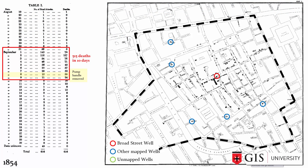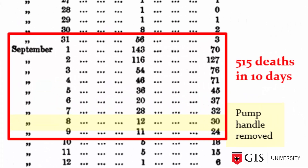In September 1854, Dr. Snow became aware of a cholera outbreak in the Soho district of London — the area shown here with the dashed line. Cholera is a really infectious waterborne disease that can literally kill in hours. People would say goodbye to their loved ones in the morning and not make it home for dinner. During the outbreak, 515 people died in just 10 days.